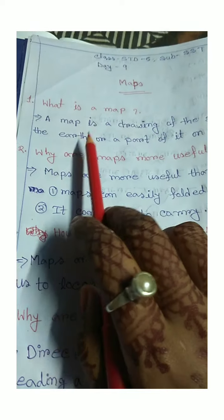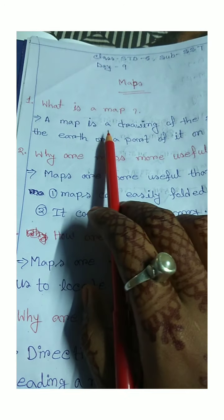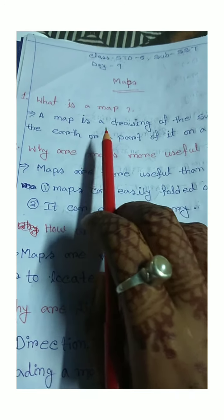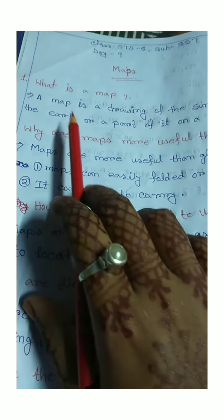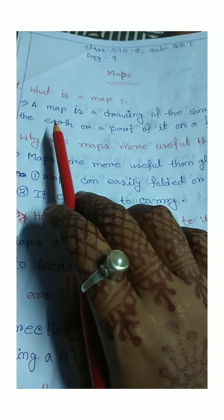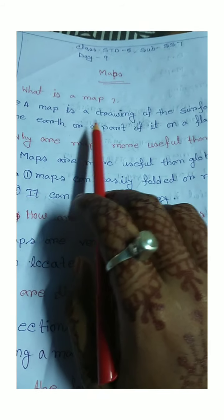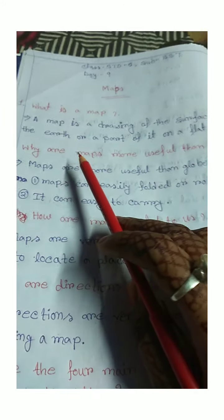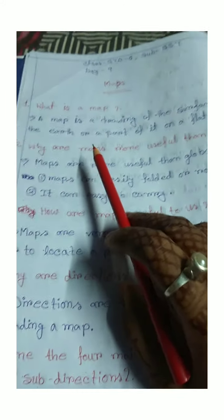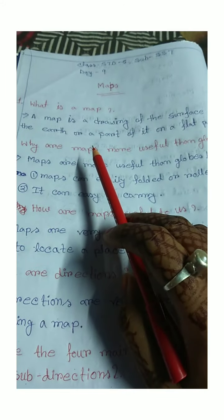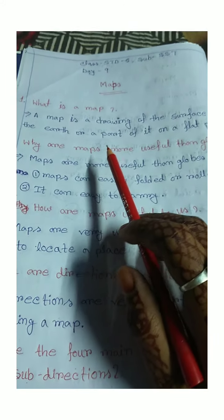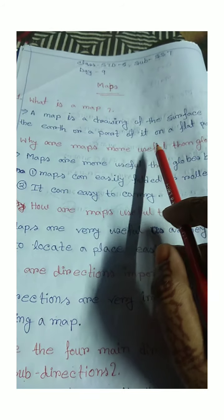The first question is: what is a map? Map is a drawing of the surface of the earth.